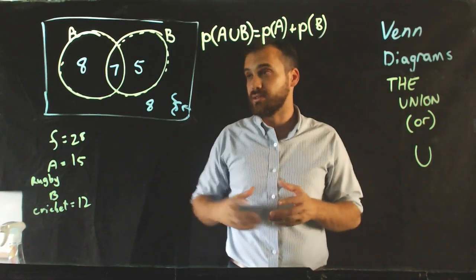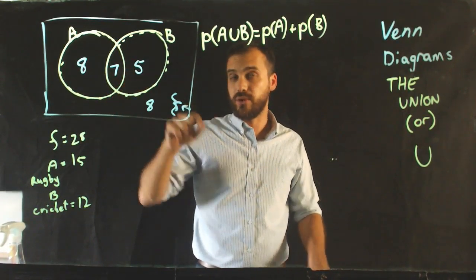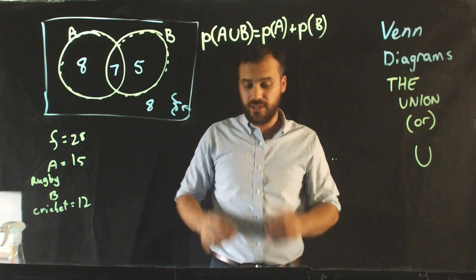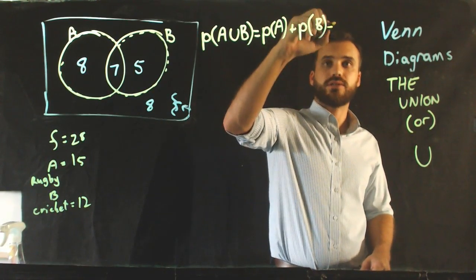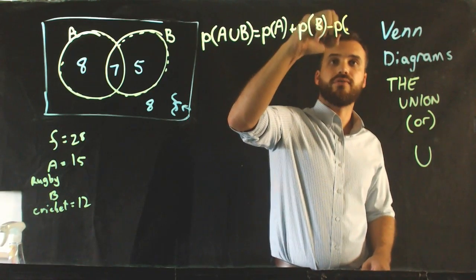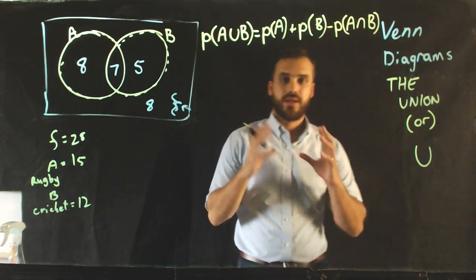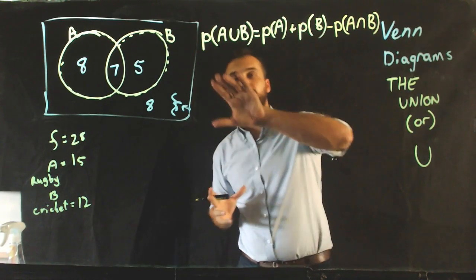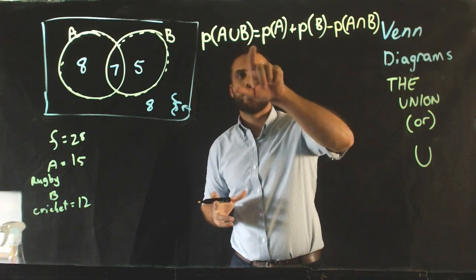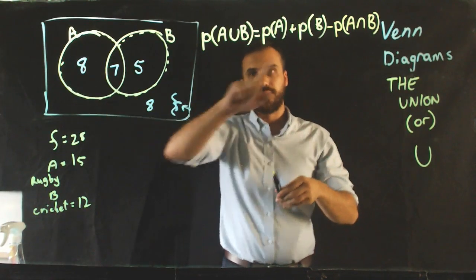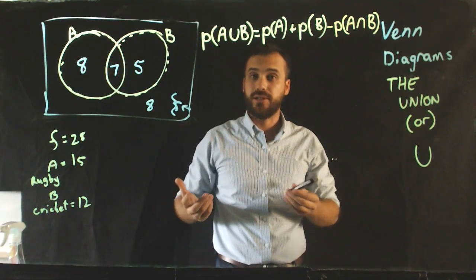So, in order for us to correct that in our really nice, neat formula, we need to put in our last step, minus the probability of A intersection B. That's our great formula for the union. So, the probability of A union B is equal to the probability of A plus the probability of B, minus the probability of A intersection B, because we don't want to double count it.